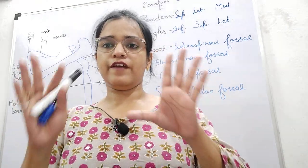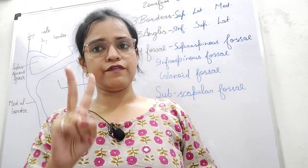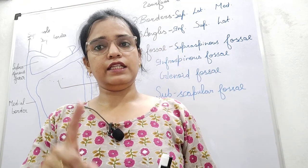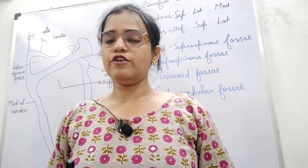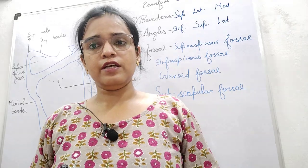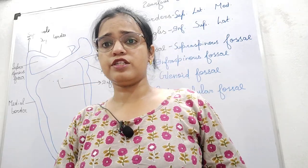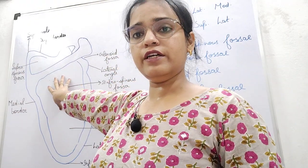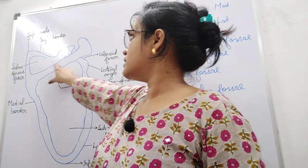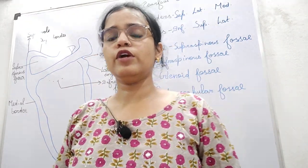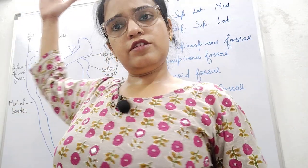If we talk about the surfaces of the scapula, there are two surfaces: one is costal and the other is dorsal. Costal is the anterior side of the scapula which is concave in nature and smooth as well. The dorsal surface is the posterior part of the scapula, which is divided into infraspinous and supraspinous by the scapular spine.